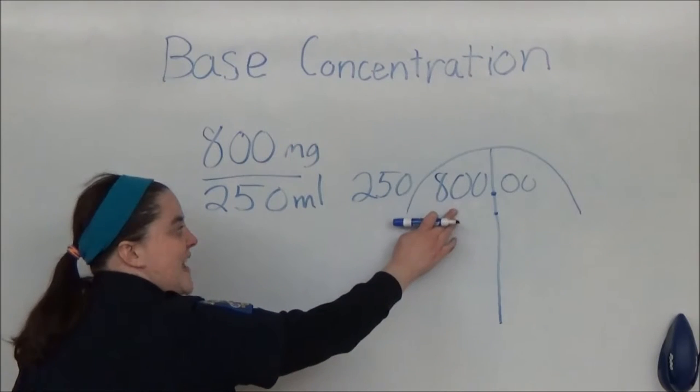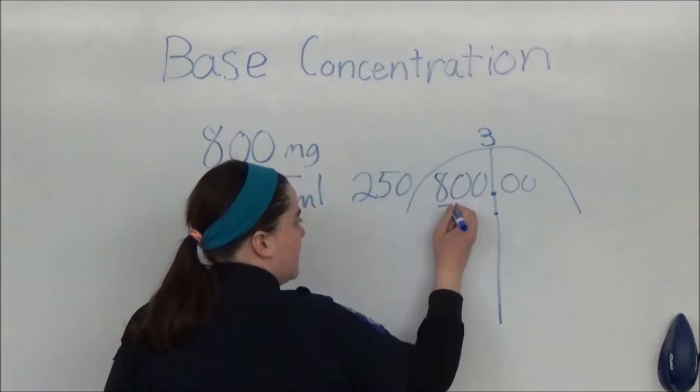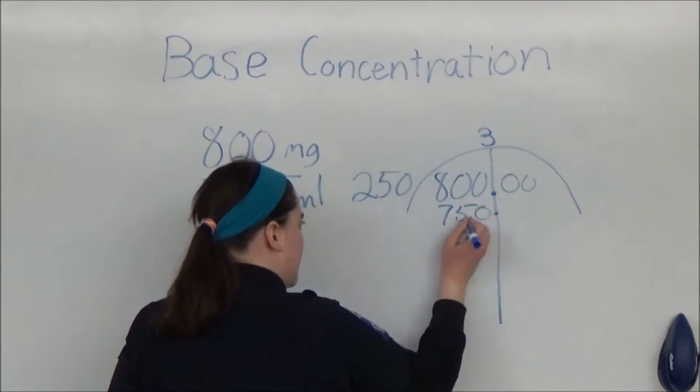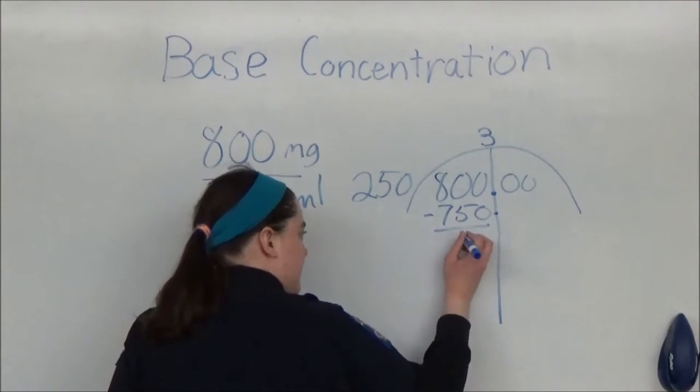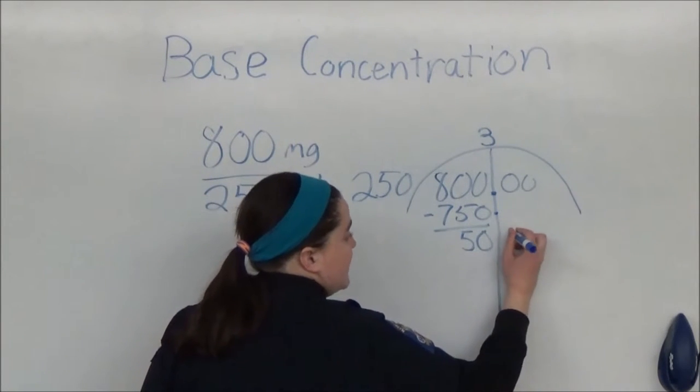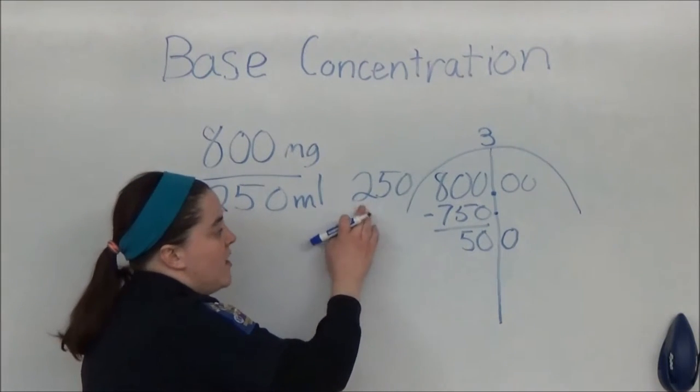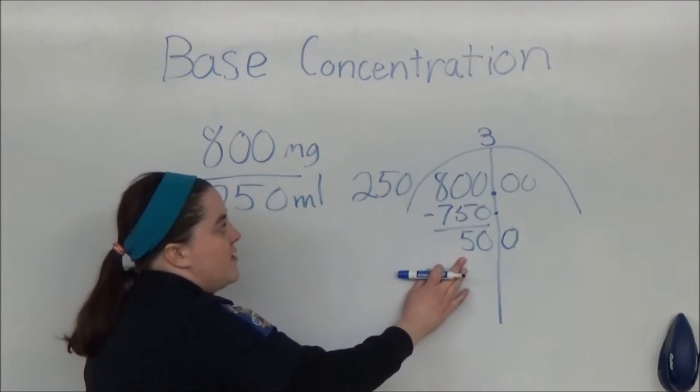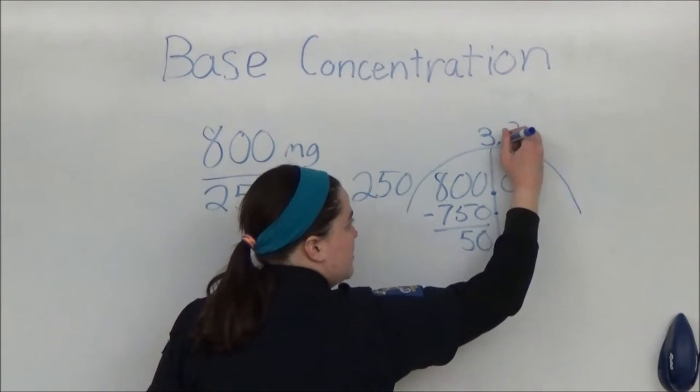250 goes into 800 three times. 800 minus 750 is 50 and then I'm going to bring down a 0 and 250 goes into 500 two times.